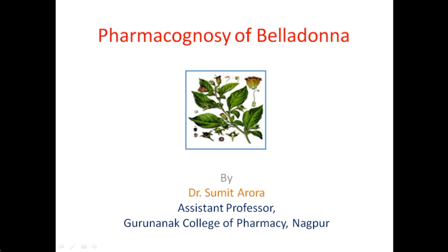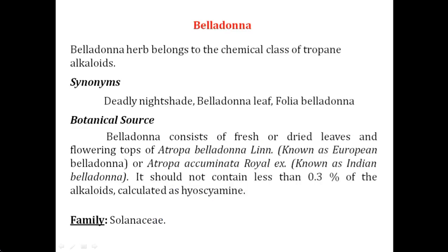Here with this figure you can see the belladonna leaf. Belladonna belongs to the chemical class of tropane alkaloids. As we have already discussed in our previous video, two examples of alkaloids: one was Rauwolfia serpentina, which belonged to indole alkaloid, and second was opium, which belonged to isoquinoline alkaloid. This is the third drug, belonging to the category of tropane alkaloid.